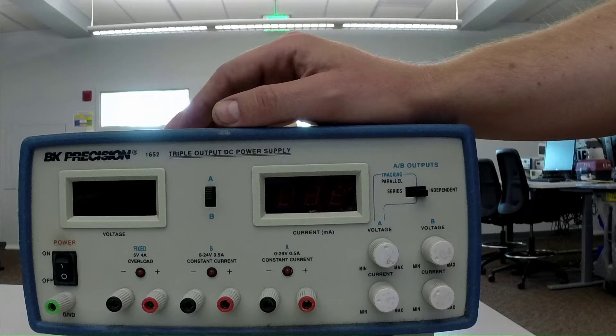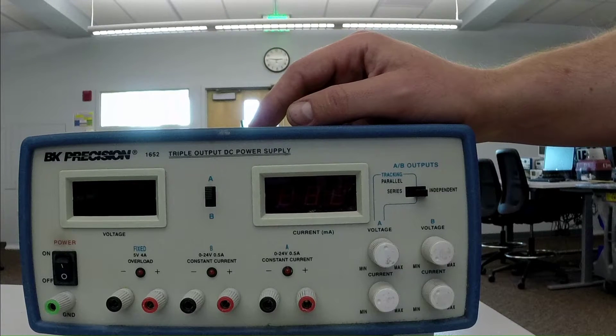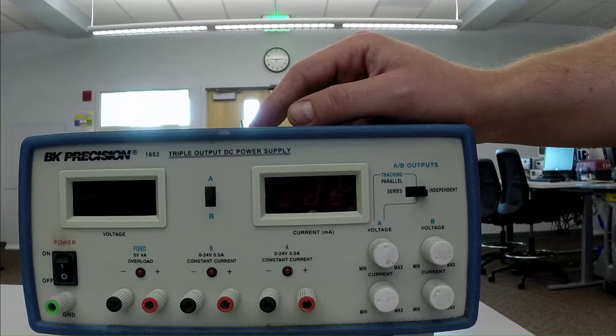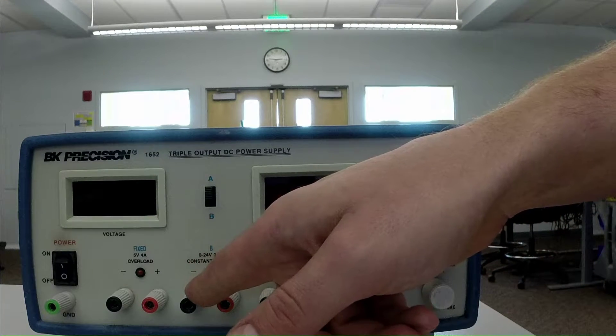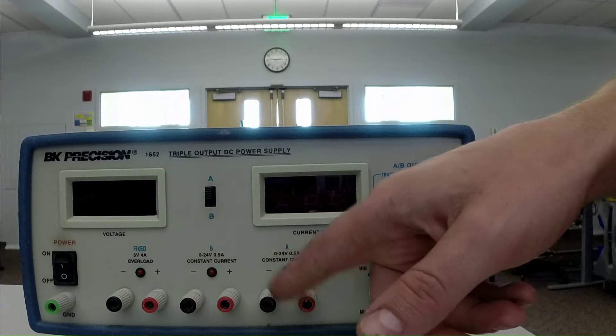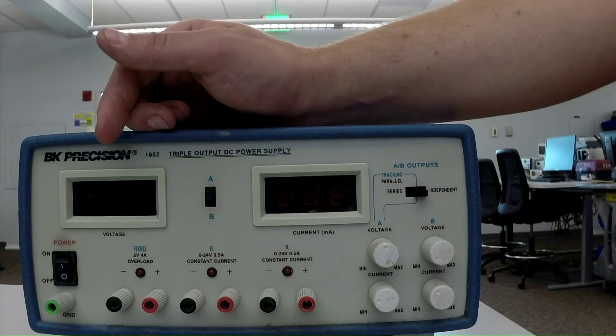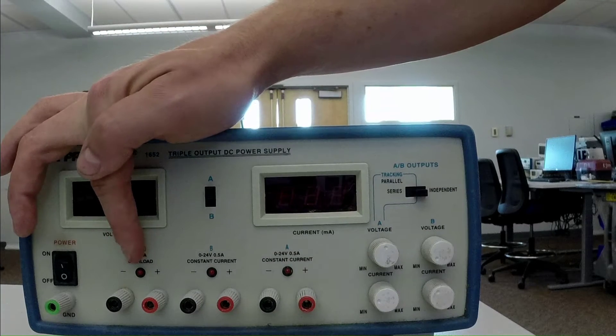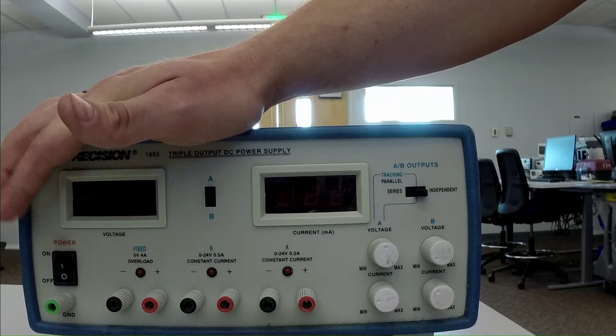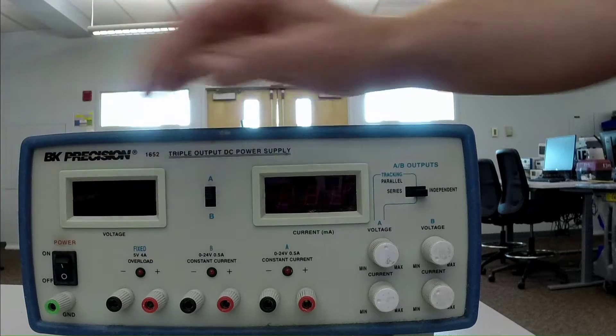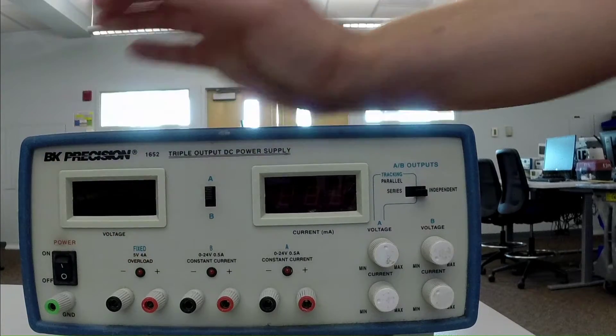So when you come here, what we've got is three channel power supplies. We have two channels where we can adjust the voltage and the current limits. That's channels A and B here. And we notice we have two terminals for each of those so we can make a complete circuit. And then we have a fixed 5-volt circuit right here. So that channel will always supply 5 volts and it will supply up to 4 amps, which is more current than the other two channels will supply. So if you have a higher-powered device, you can supply it with 5 volts there.